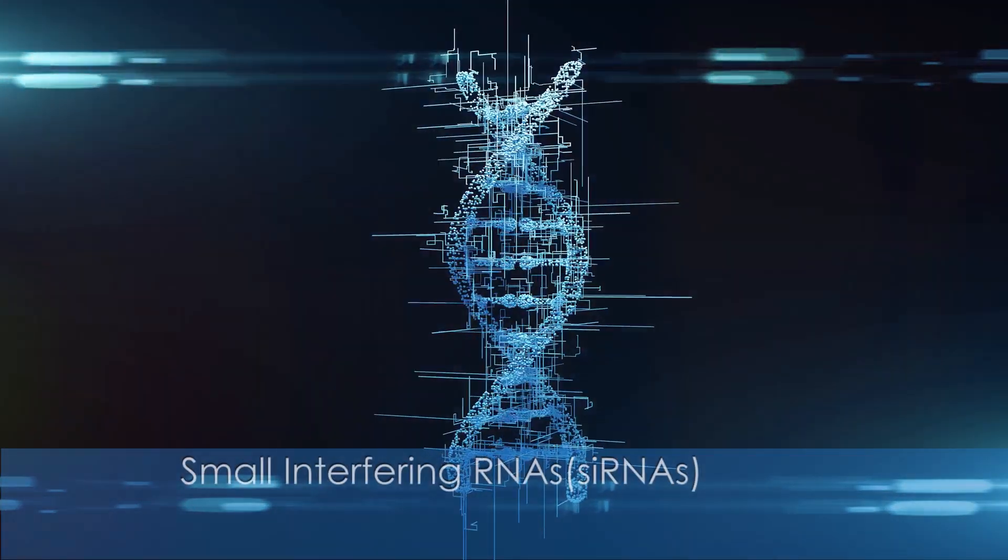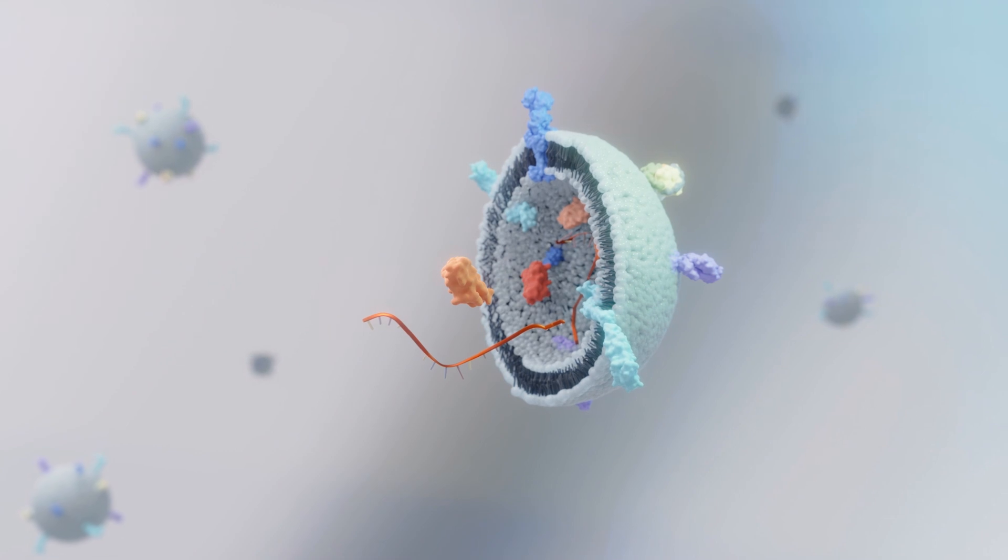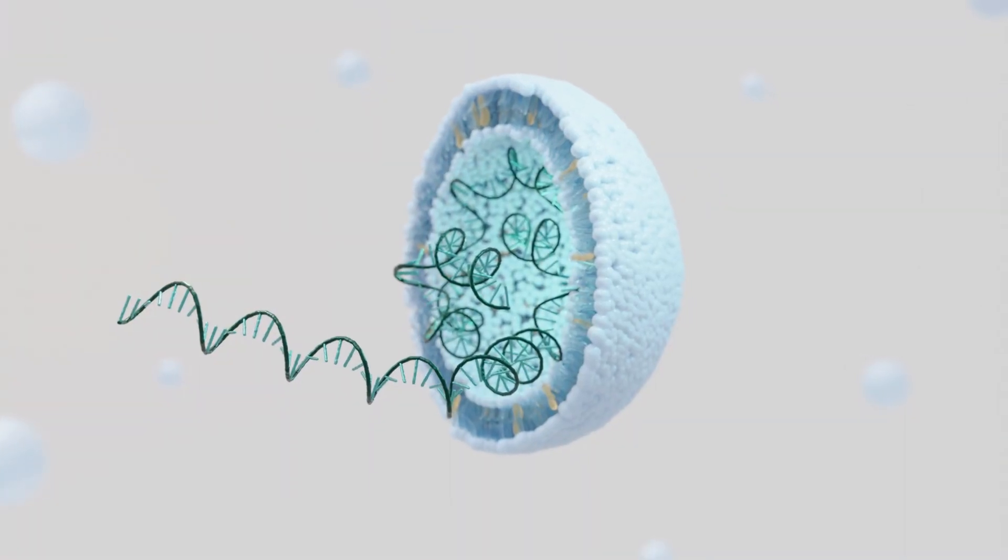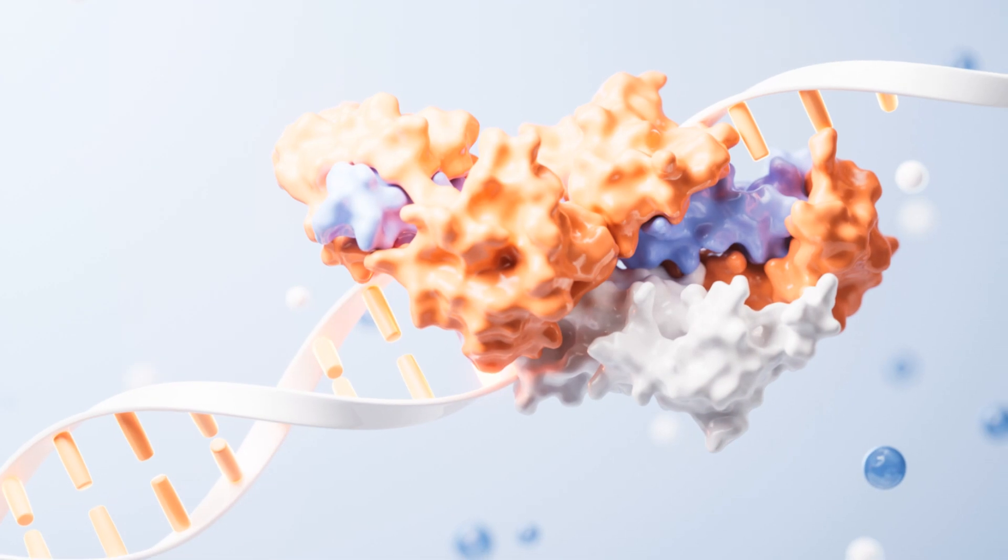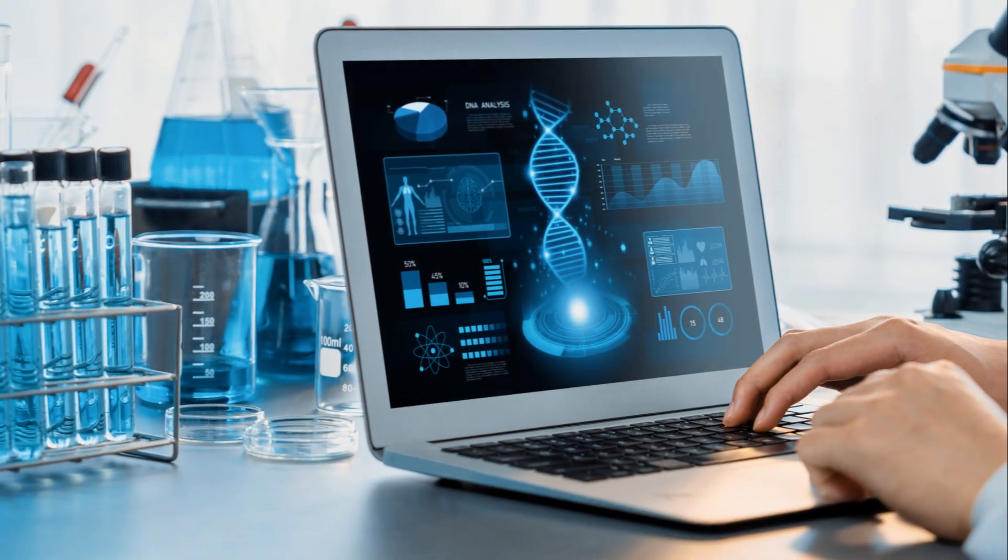Small interfering RNAs, known as siRNAs, guide the RNA-induced silencing complex to degrade specific mRNA molecules. This process, called RNA interference or RNAi, silences the expression of target genes, offering a potent tool for gene silencing.